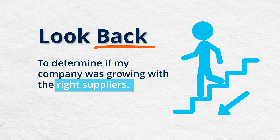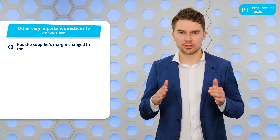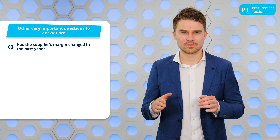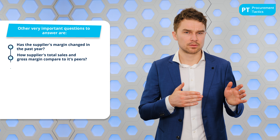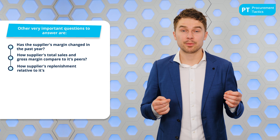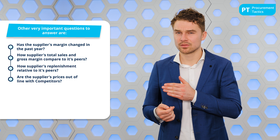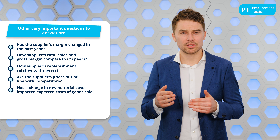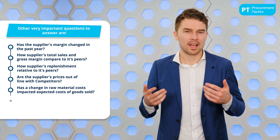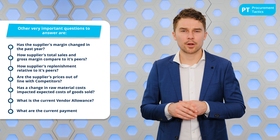But the truth is, in most businesses it's the other way around. Other very important questions to answer are: Has the margin of the suppliers you're negotiating with increased or decreased over the last year? How do the suppliers' total sales and gross margin compare to its peers? How is the suppliers' replenishment relative to its peers? Are the suppliers' prices out of line with competitors? Has a change in raw material cost impacted costs of goods sold? And what is the current vendor allowance and what are the current payment terms?